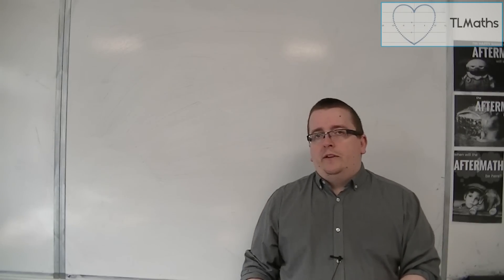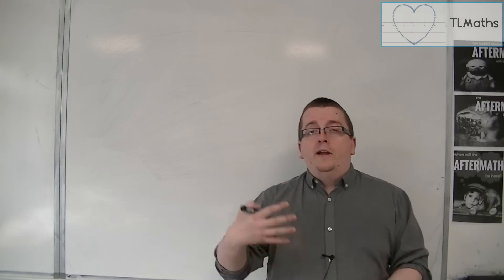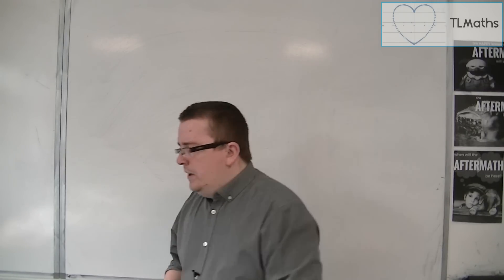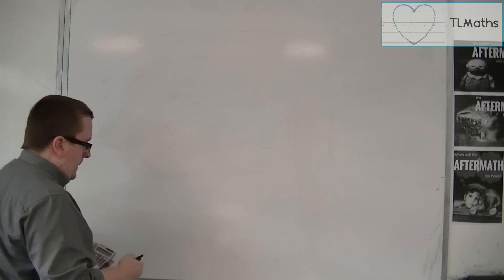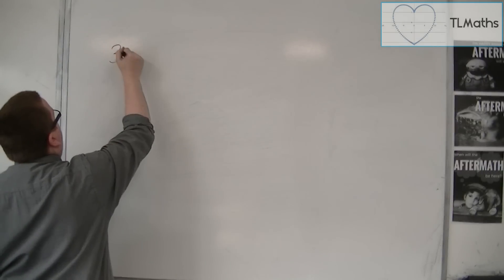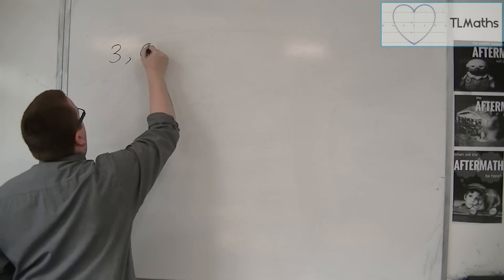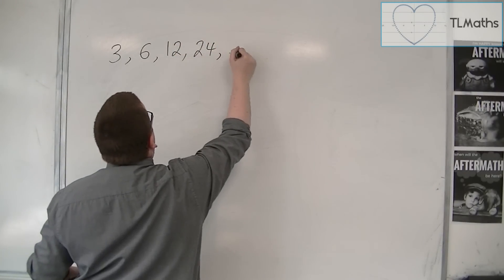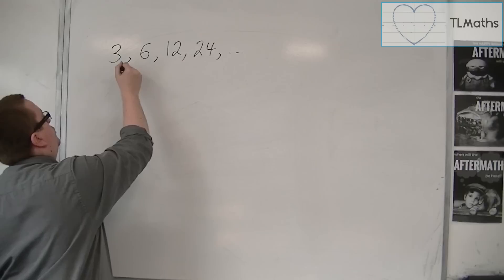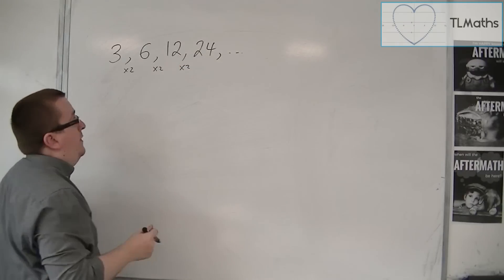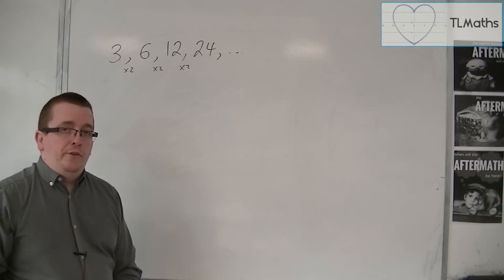With geometric sequences, you're either multiplying or dividing by the same amount each time. So for example, you could have something like 3, and then 6, and then 12, and then 24, etc. Each time, I'm multiplying by 2, and this would be a geometric sequence.